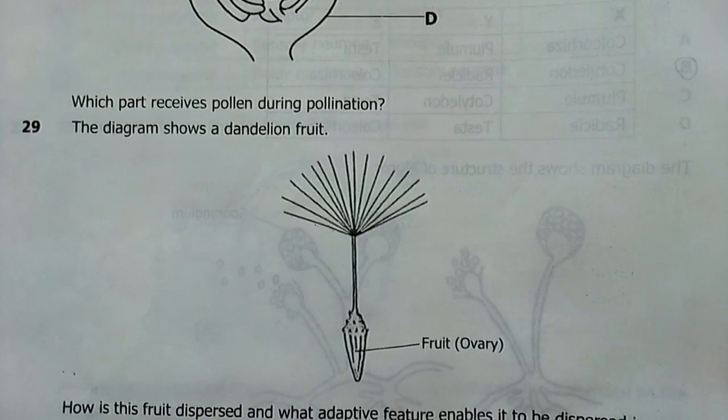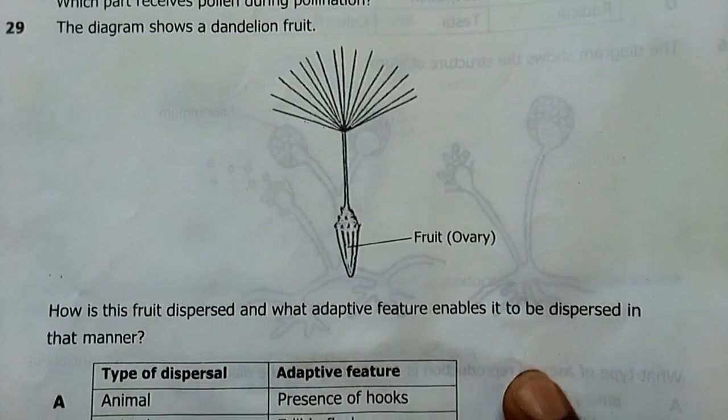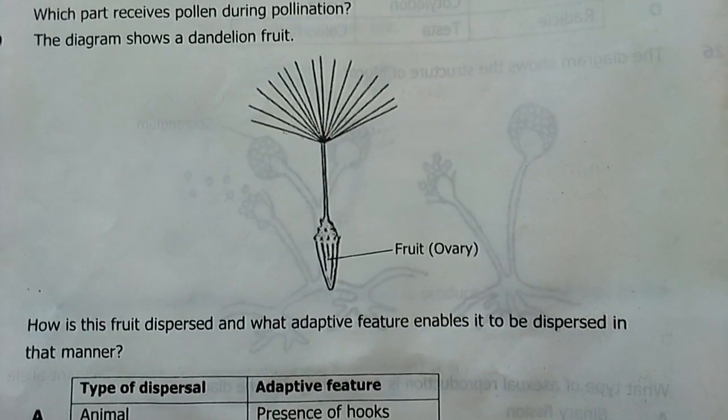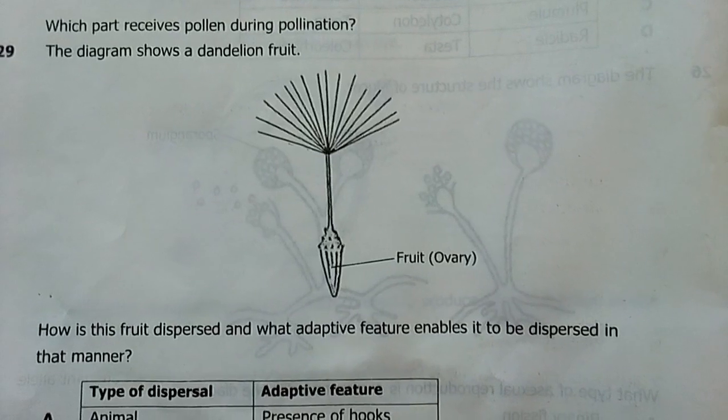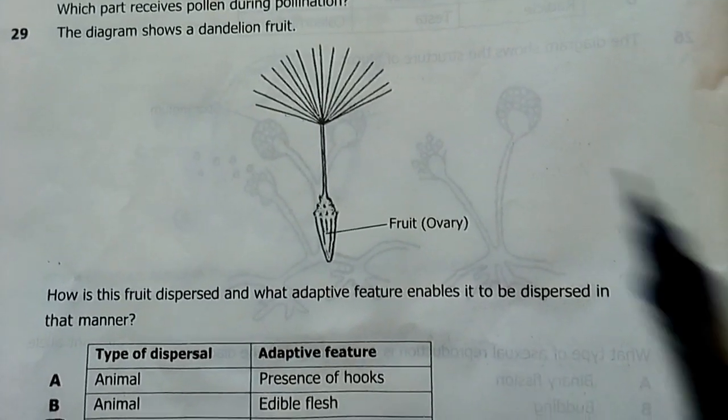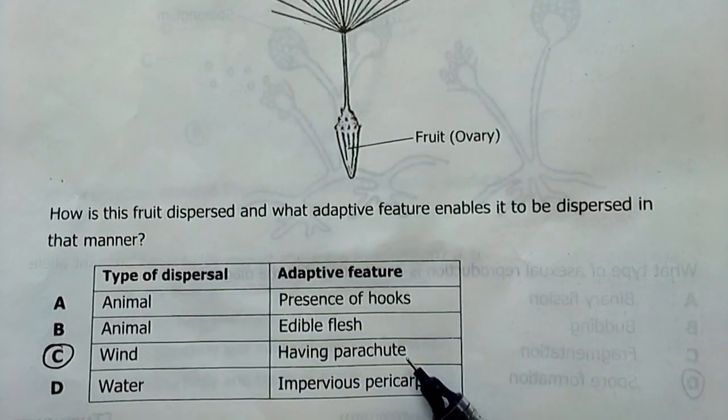29, the diagram shows a dandelion fruit. How is the fruit dispersed and what adaptive feature enables it to be dispersed in that manner? It has a parachute. By wind. Wind having a parachute. The answer is C.